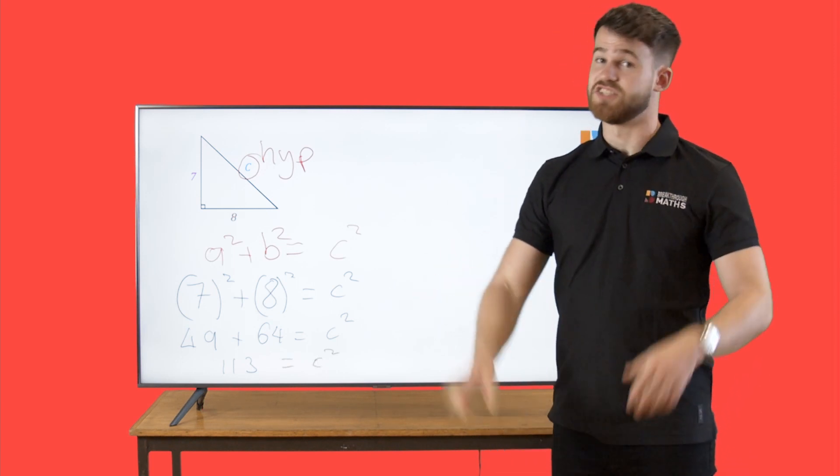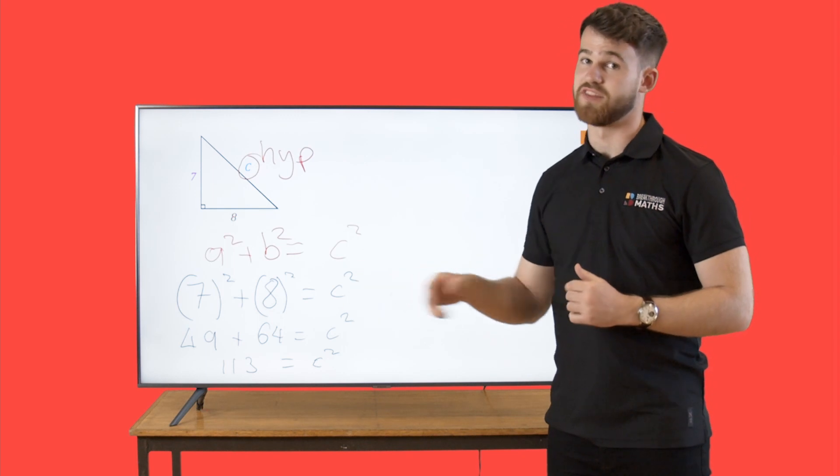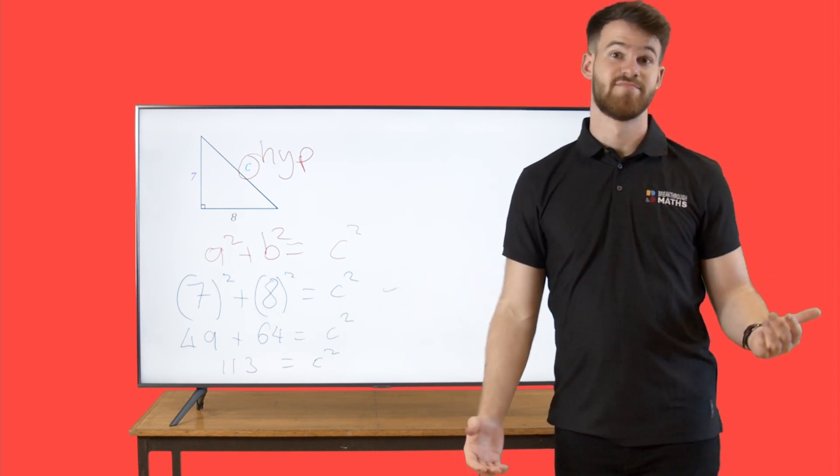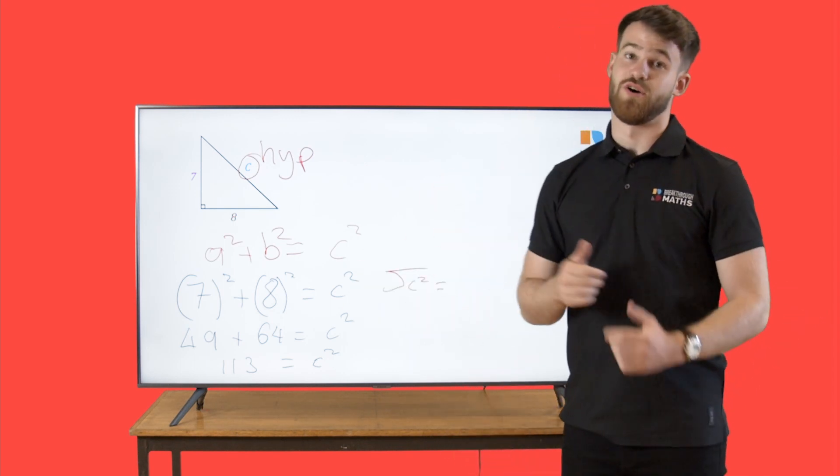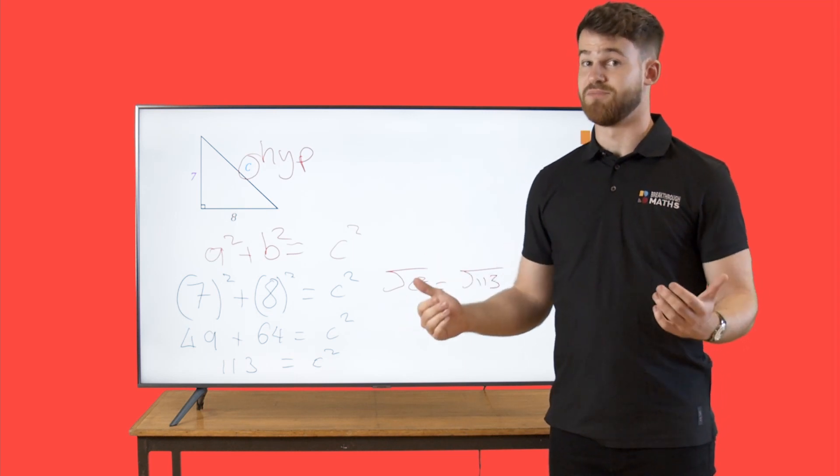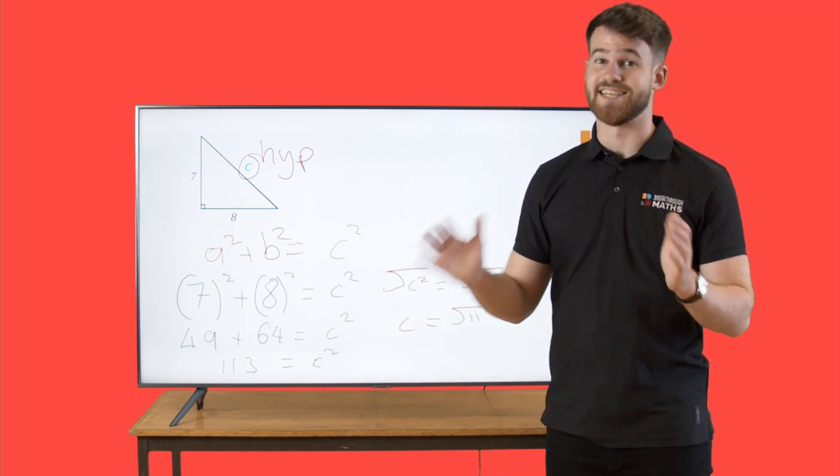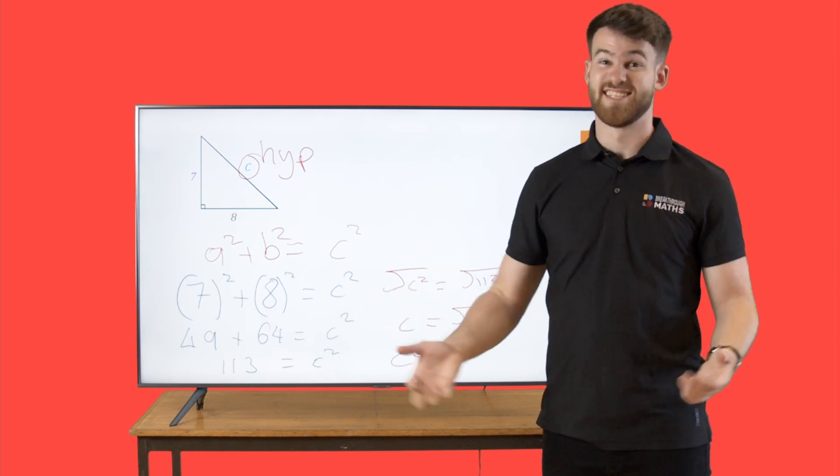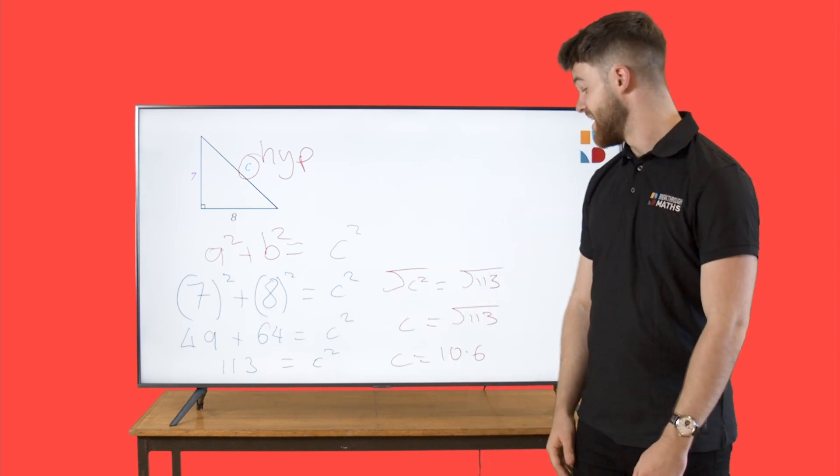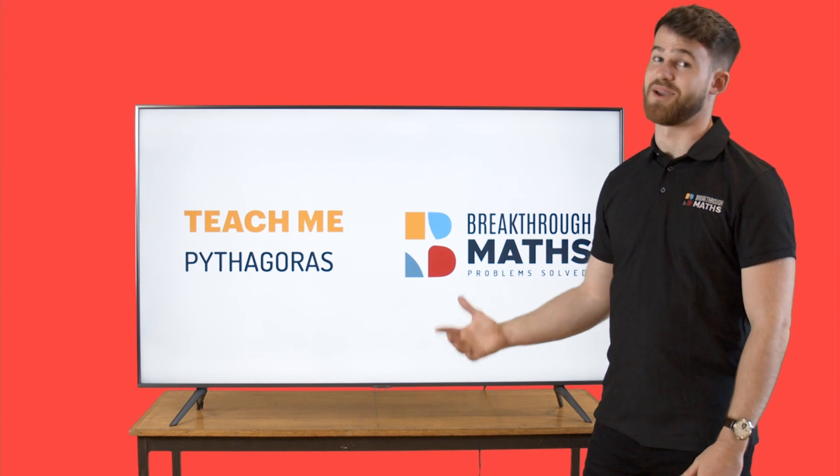And now we just need to square root both sides to get rid of that square over the c and we'll have c. So the square root of 113 is equal to c, which if you put that into your calculator comes out to be c is equal to 10.6 centimeters. And that is Pythagoras made easy.